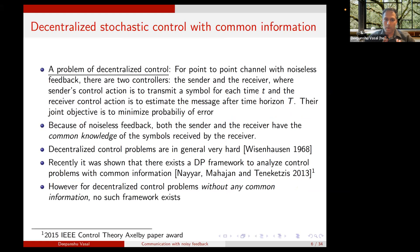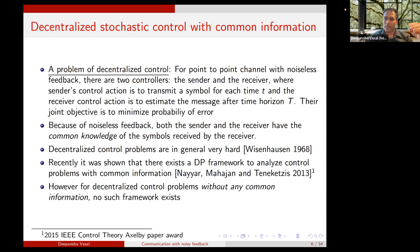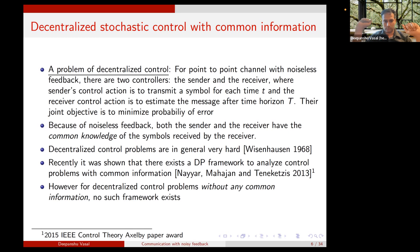I argue this problem is basically a problem of decentralized control. In a point-to-point channel with noiseless feedback, there are two controllers — the sender and the receiver. The sender must decide what symbol to transmit at each time step, and the receiver at time T wants to estimate the message, minimizing probability of error. With noiseless feedback, both sender and receiver have common knowledge of the symbols received by the receiver — this is a decentralized control problem with common information.